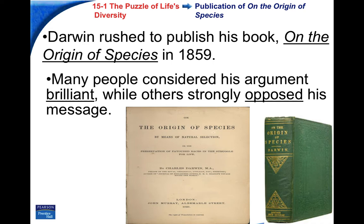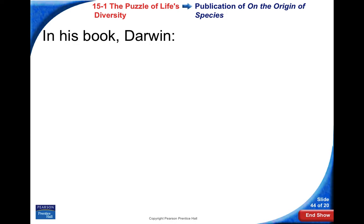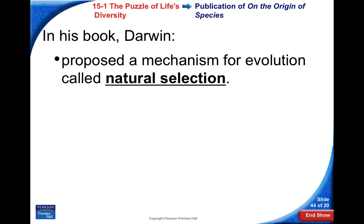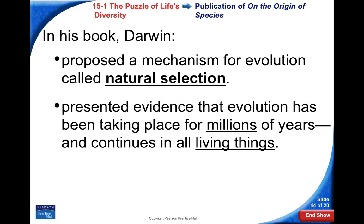Most people thought it was extremely brilliant, especially the scientific community. However, a lot of people in the everyday community strongly opposed it because they felt it went against their religious views. In his book, Darwin proposed a mechanism for evolution which he called natural selection, and he presented a lot of evidence that evolution had been taking place for millions of years.